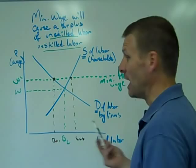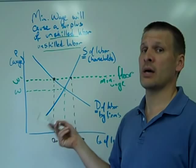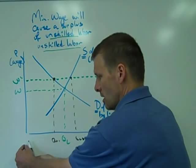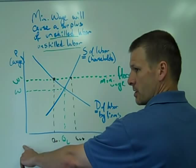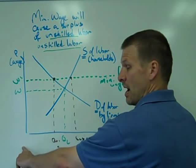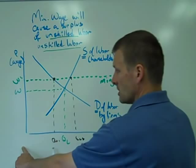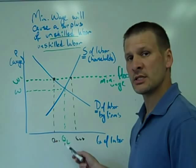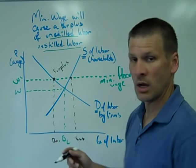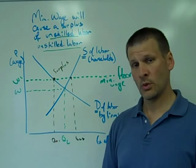But there are fewer firms that are willing to pay that artificially high price. So what we have is a situation where the number of laborers willing to work for that wage rate is QL2, way out here. And that is outstripping the amount of firms, the number of firms, the amount of positions that firms have available at this artificially high wage rate. And so what we have here is a surplus of labor. A surplus of unskilled labor, which is the same thing as unemployment.